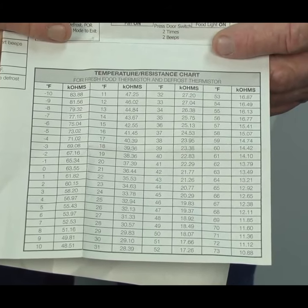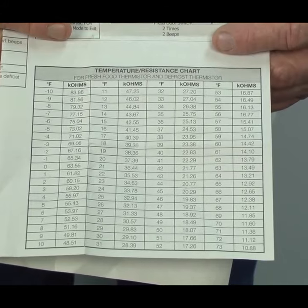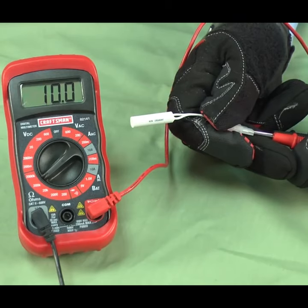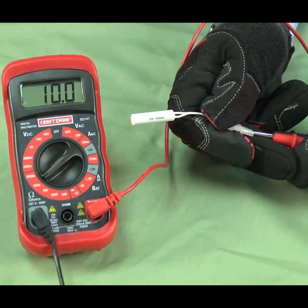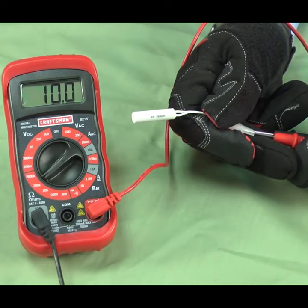Refer to this chart for the expected resistance readings for your model. On this model, at room temperature of 72 degrees, you should measure around 11,000 ohms of resistance through the thermistor.